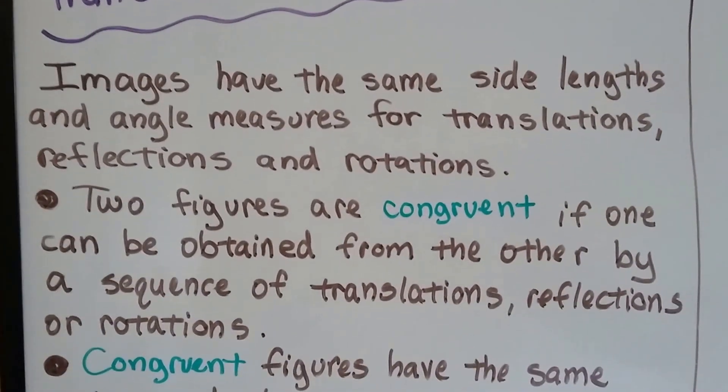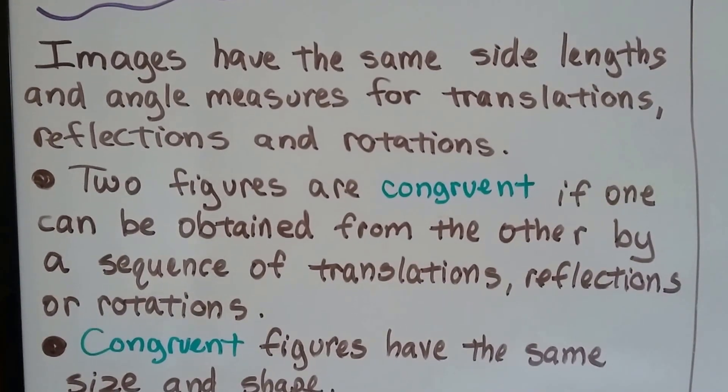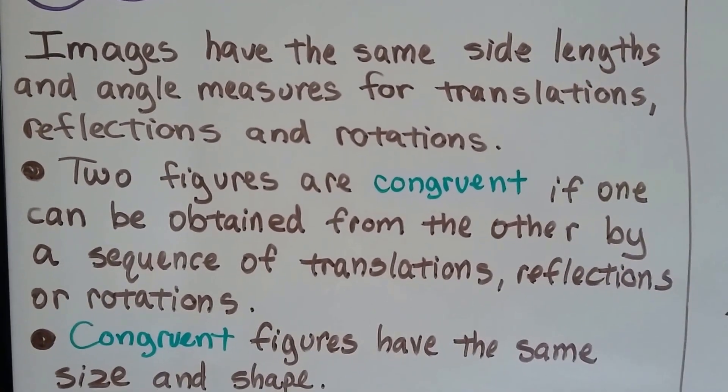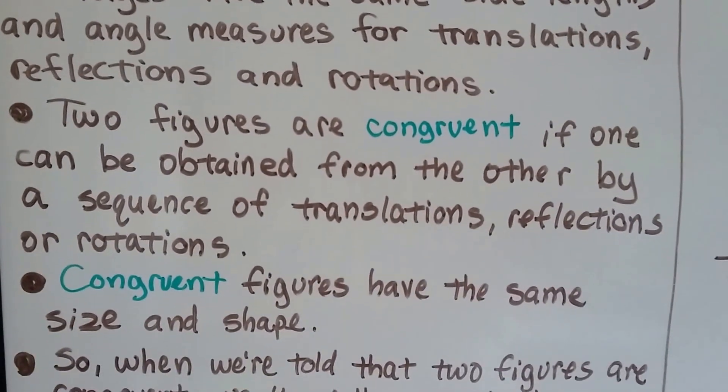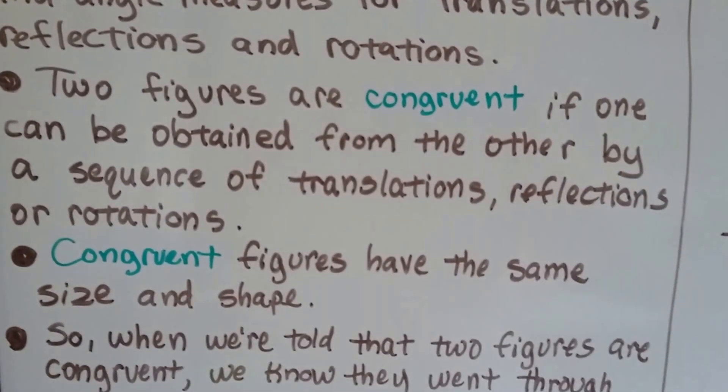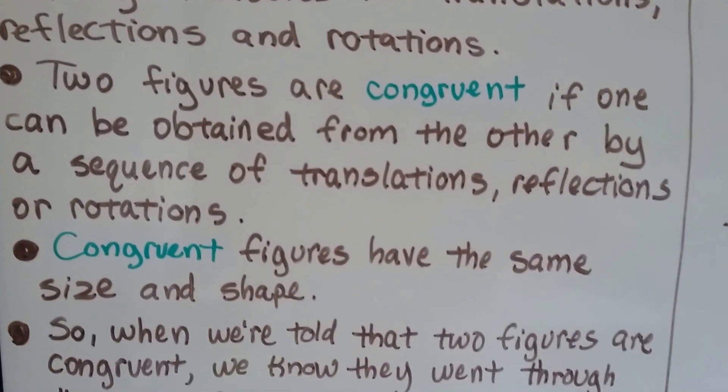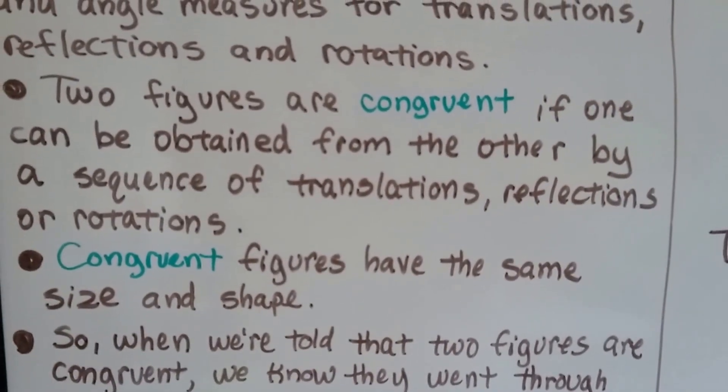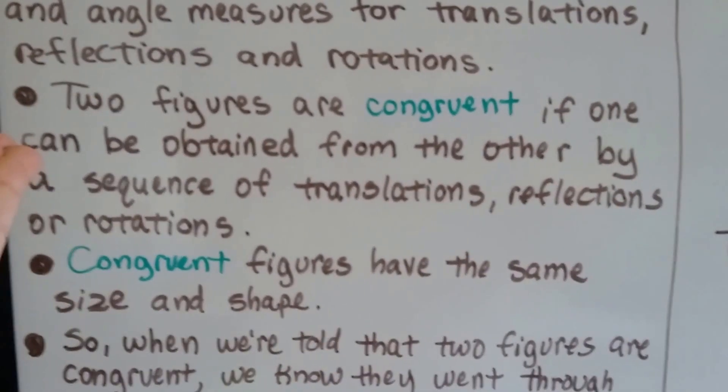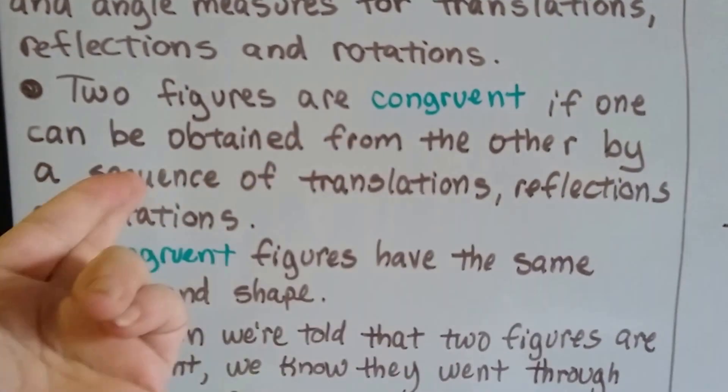Images have the same side lengths and angle measures for translations, reflections, and rotations. Two figures are congruent if one can be obtained from the other by a sequence of these translations, reflections, and rotations.